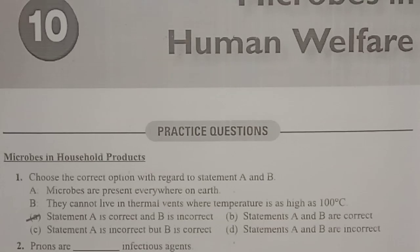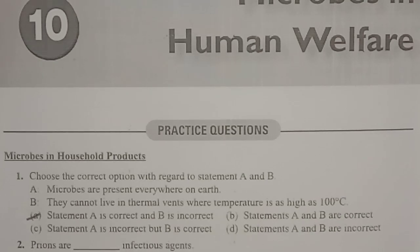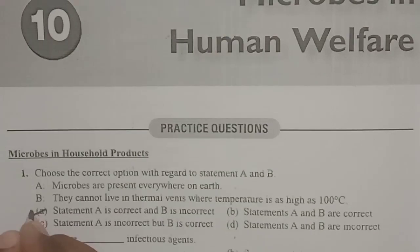The first question: choose the correct option with regard to statements A and B. Statement A says microbes are present everywhere on earth, and statement B says they cannot live in thermal vents where temperature is as high as 100 degrees Celsius. Microbes are everywhere on earth — this is correct. They are even present in thermal vents at 100 degrees Celsius and can tolerate such high temperatures. Statement B says they cannot live there, which is incorrect. So only statement A is correct, making option A the correct answer.